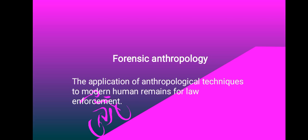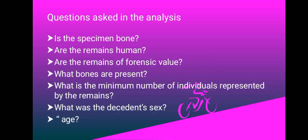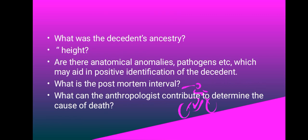The questions that forensic anthropologists seek to answer during investigations include: Is the specimen bone? Are the remains human? Are the remains of forensic value? What bones are present? What is the minimum number of individuals represented by the remains? What is the decedent's sex, age, ancestry, and height? Are there any anatomical anomalies or pathologies which may aid in positive identification of the decedent?